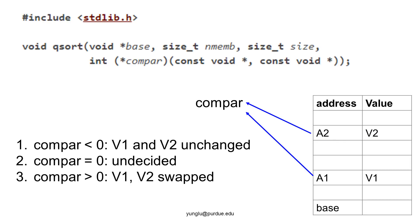This slide shows how the qsort function works. It selects the addresses of two elements in the array, marked A1 and A2. These two addresses are sent to the comparison function, which returns an integer that can be less than 0, equal to 0, or greater than 0. If the value is less than 0, the values at A1 and A2 are unchanged because V1 is already smaller than V2. If the comparison function returns greater than 0, then V1 is greater than V2 and the two values should be swapped. If it returns 0, qsort may or may not swap the values.